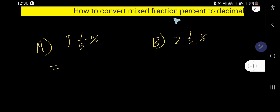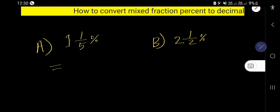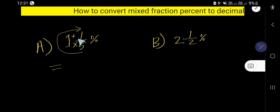How to convert a mixed fraction percent to decimal. This is the mixed fraction percentage, and we would like to convert this to decimal. So let us convert — multiply the whole number by the denominator, then add the numerator.